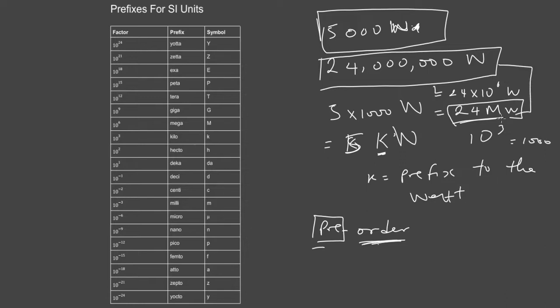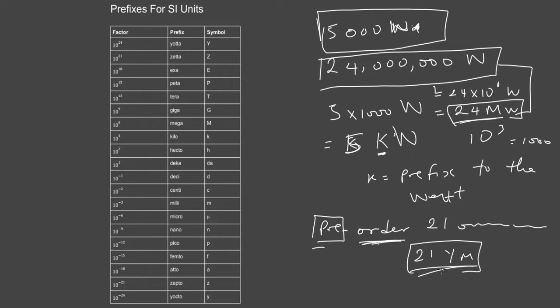There are many prefixes. 10²⁴ is yotta, then we have zetta, exa, peta, tera, giga, mega, and so on going downward. For example, if you have a number with 24 zeros, you can shorten it and just say 'yotta' — so instead of 21 with 24 zeros, you say 21 yottameters.